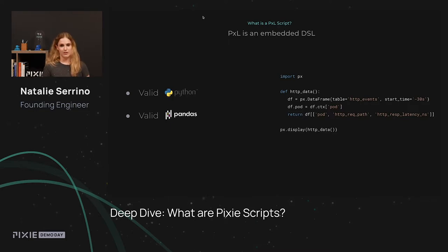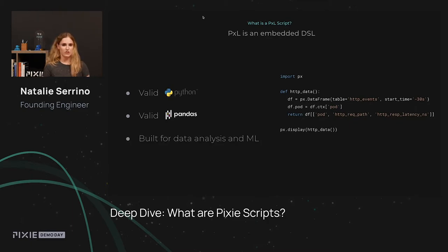So what we decided to do is make all Pixel code valid pandas as well. Like pandas, Pixel is an embedded domain-specific language in Python. To recap, we wanted to avoid reinventing the wheel and make Pixel more accessible, so we made it follow the pandas APIs and use Python syntax.